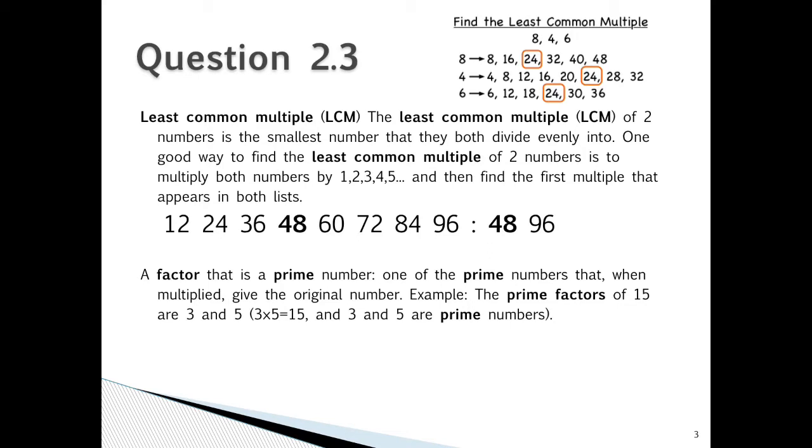A factor that is a prime number, one of the prime numbers that when multiplied give the original number. Example: The prime factors of 15 are 3 times 5, and 3 and 5 are your prime numbers. So all of our factors for 24 is 8, 6 and 4.